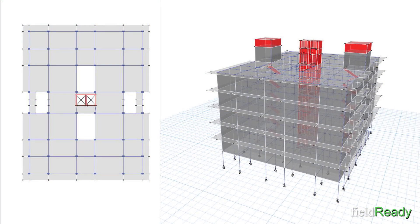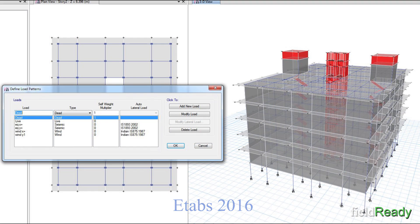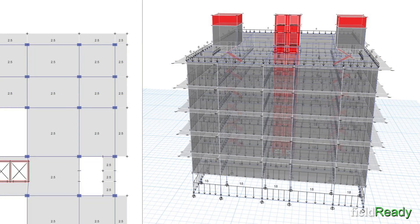Then I moved on towards the structural modeling and analysis part. The complete structural design was done in ETABS 2016. If you are designing an RCC building, ETABS is the best modern software to work with. This building was designed for dead load, live load, earthquake, and wind load as per the IS codes.